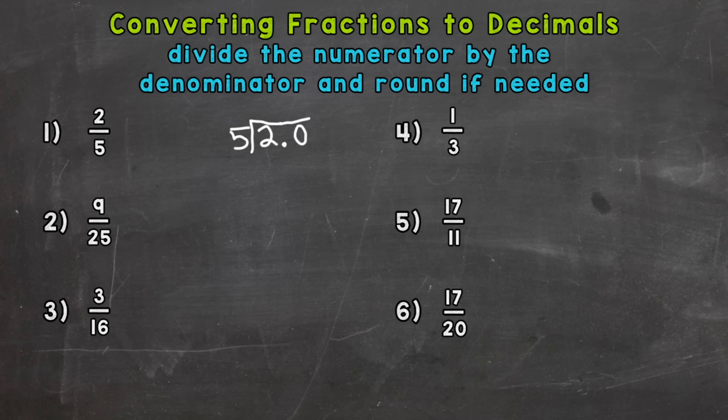So now we can think of that as 20. Bring our decimal straight up. How many whole groups of 5 can we pull out of 20? Well, 4. 4 times 5 is 20. Subtract and we get a zero and that tells us we are done. So 2 fifths is equal to 4 tenths.